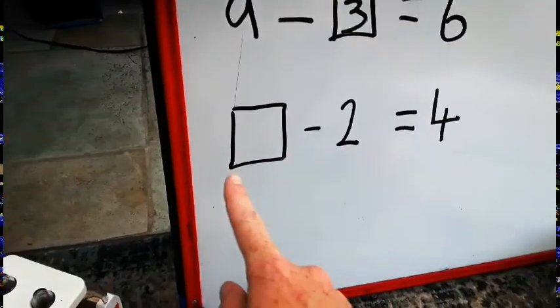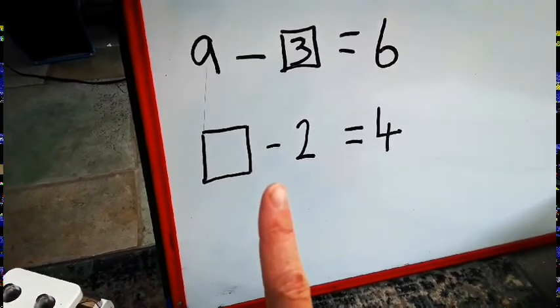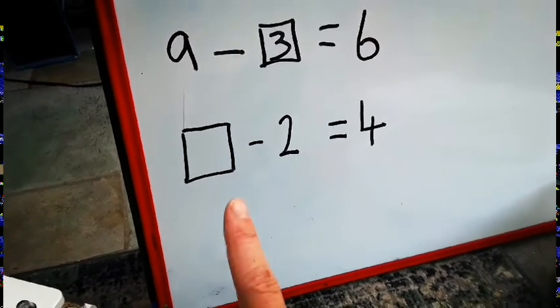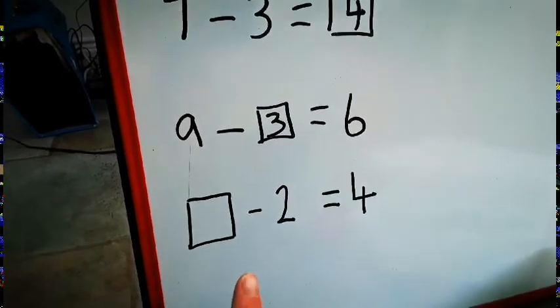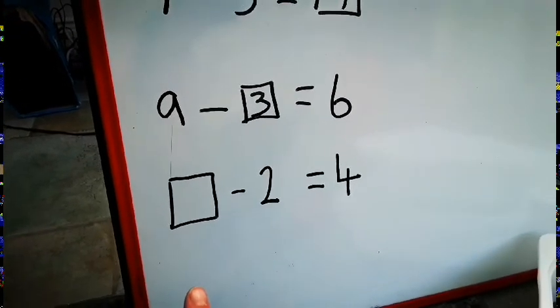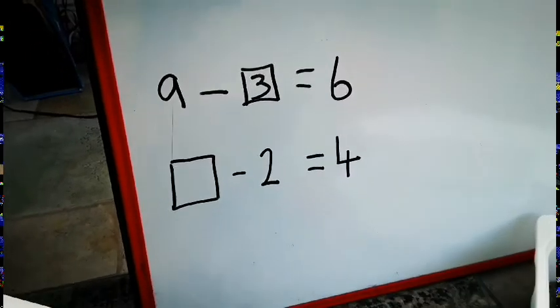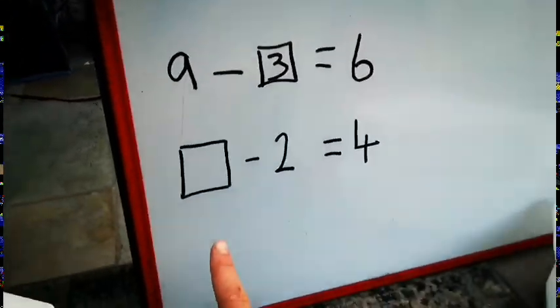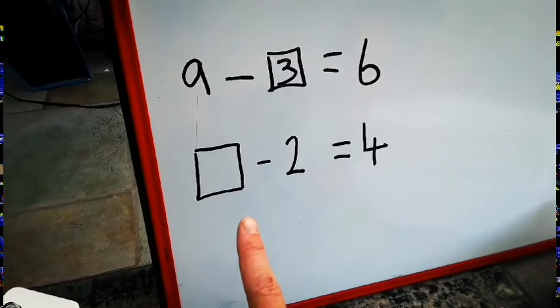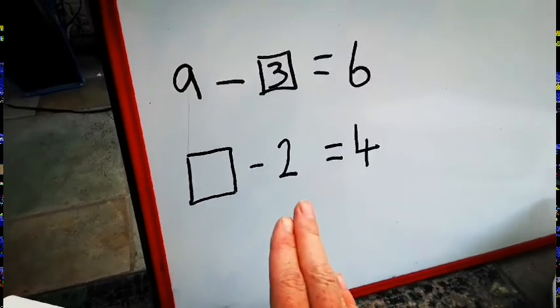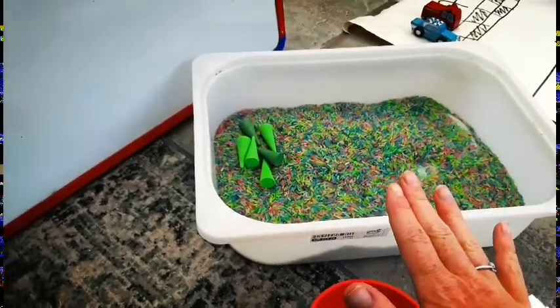For this one, now, the biggest number, the number at the start of subtraction is always the biggest number. It's really important that children understand that, that you have an amount and it has to be the biggest number to be able to take something away. So in this one, our starter number's not there. We took away 2 and we were left with 4. So our starter number isn't there. We're trying to find out what our starter number is.